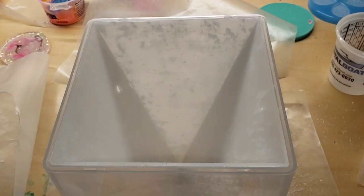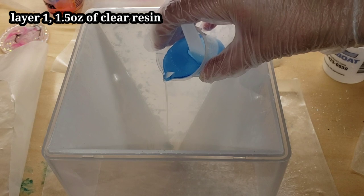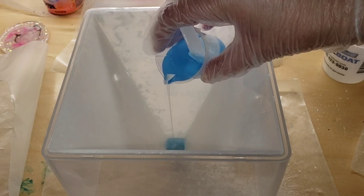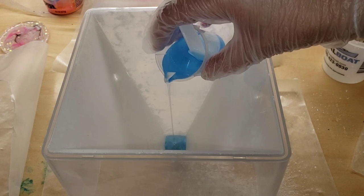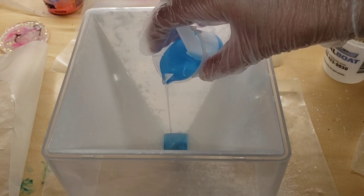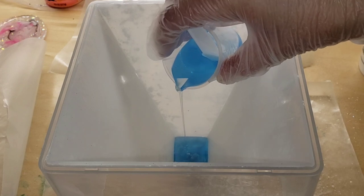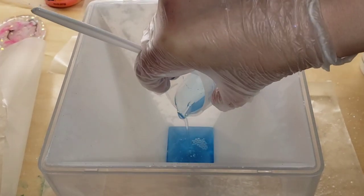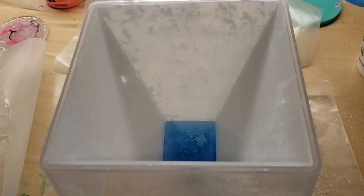I attached a piece of string to the rose and attached that to a skewer. That's how we're going to submerge the rose into our pyramid. I'm pouring that, so this is 1.5 ounces of the True Blue tinted resin, pouring that in slowly.